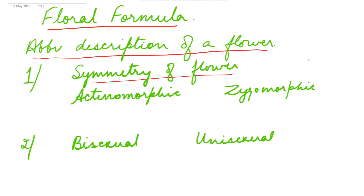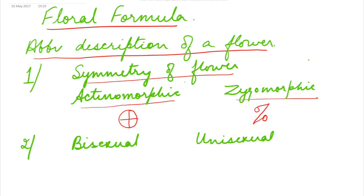It tells us whether the flower is actinomorphic or zygomorphic. Actinomorphic means the flower has radial symmetry — it can be divided into two equal halves at any plane passing through the center. Zygomorphic is bilateral symmetry, where the flower can be divided into two equal halves at only one plane passing through the center.